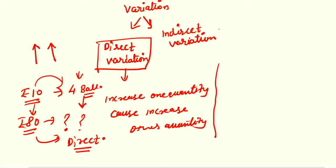In indirect variation, if one quantity is increasing, what will happen to the other quantity? It will decrease — it is the opposite of direct variation.